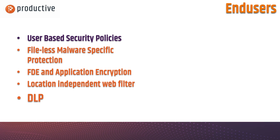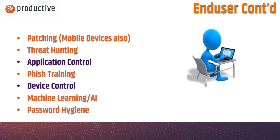For end users, several things we can be doing. Fileless malware-specific protection — let's stop things like code caving and return-oriented programming attacks. Application encryption for sure: that way if data does leak off the network, it goes out encrypted and is useless to anybody outside the environment. Location-independent web filter: so if your folks leave the office, let's have the same web policy applying to those machines as if they're in the office — we don't want them more exposed just because they've gone home, to a client site, or to a conference. And again, data leak prevention combined with application encryption can be quite powerful to ensure that even if data gets off the machine, it's totally useless to anyone else.